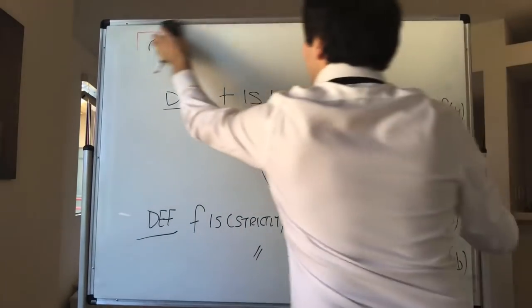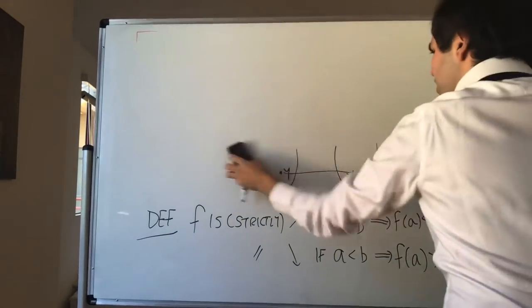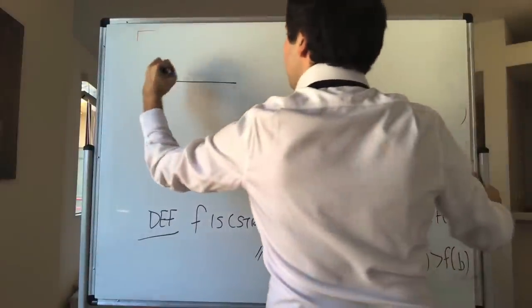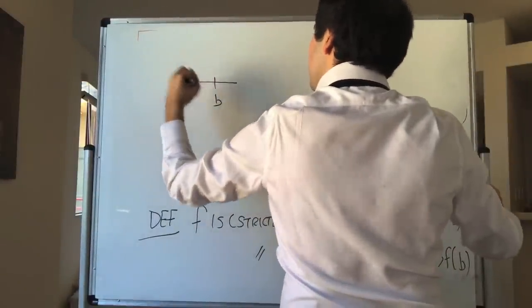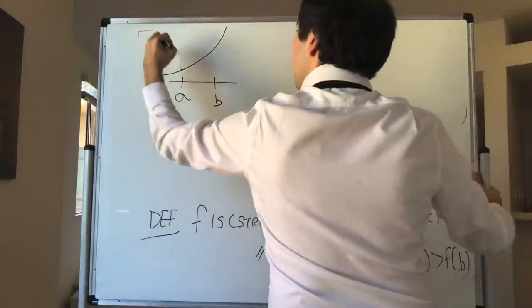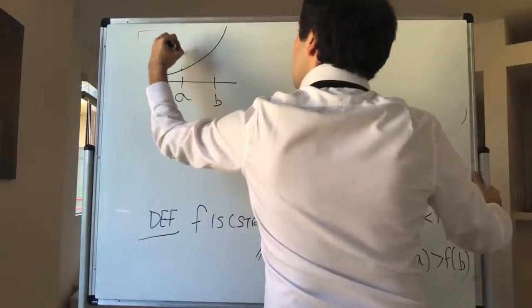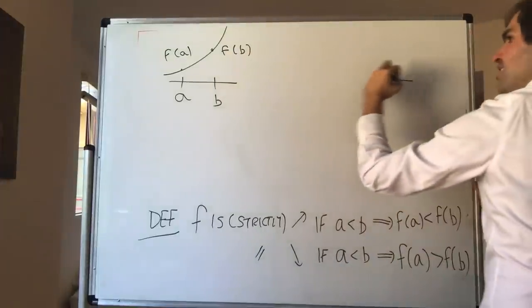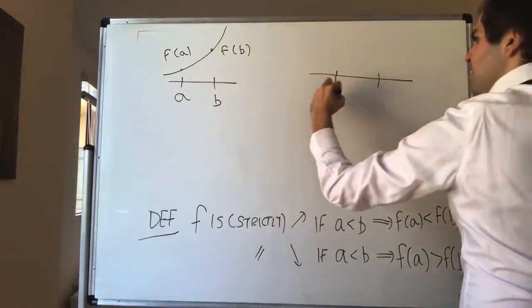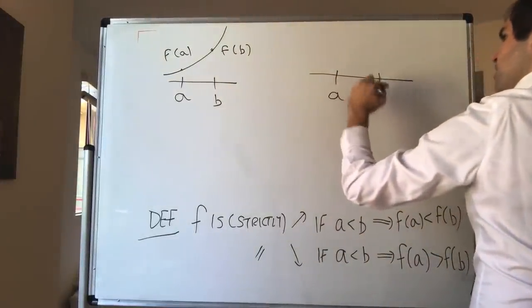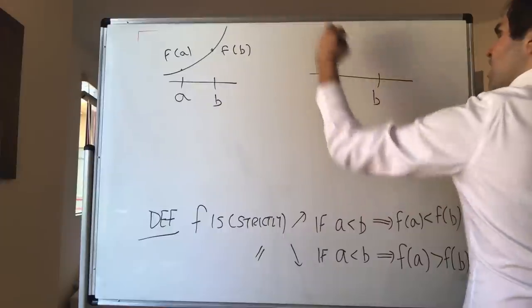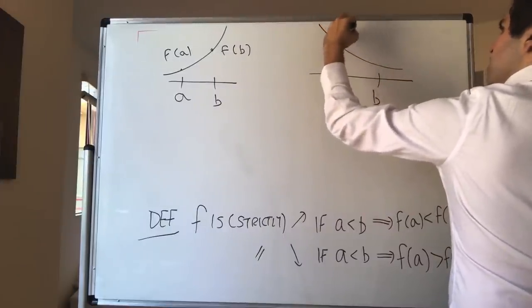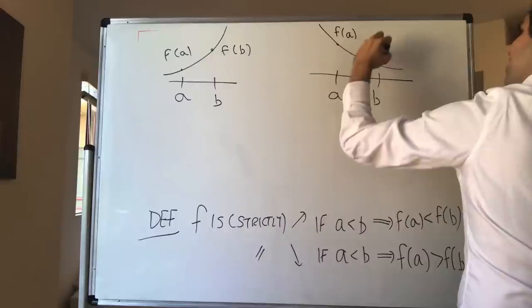And f is strictly decreasing if a less than b implies f of a is bigger than f of b. So just in terms of pictures: increasing means if a is less than b then f of a is less than f of b, and decreasing means if a is less than b then f of a is greater than f of b.